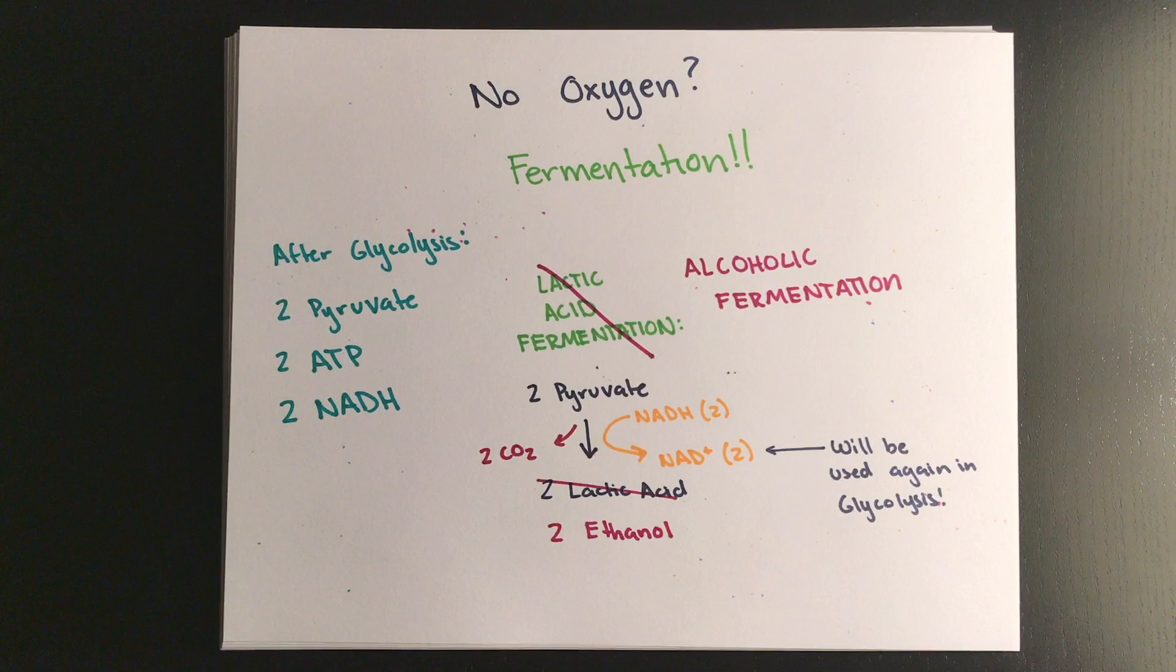Now, the two problems with fermentation is one, both ethanol and lactic acid can be harmful in large percentages, and secondly, instead of 36 ATP per glucose, only two ATP are produced per cycle.